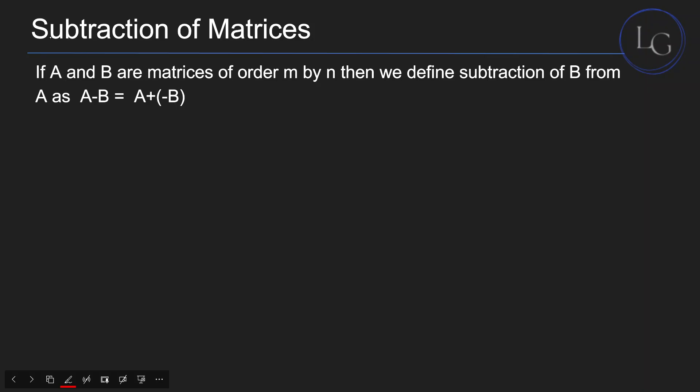Now see the subtraction of matrices. It is similar to how we have done the addition of matrices. It also has the same requirement - A and B both must be of the same order M by N, so the order of A is equal to the order of B. In this case, we'll just subtract the corresponding entries instead of adding them.